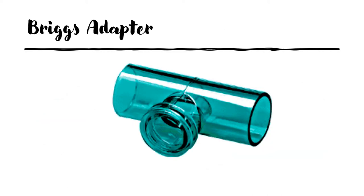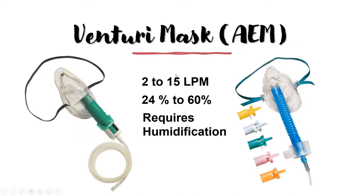We also have the Briggs adapter, also known as the T-piece — it's called that because it looks like the letter T. This part of the Briggs adapter is connected to your endotracheal tube, tracheostomy tube, or any advanced airway the patient uses. One end connects to the breathing circuit or large bore tubing, and the other end may be left open or fitted with a 50 cc dead space to act as a reservoir.